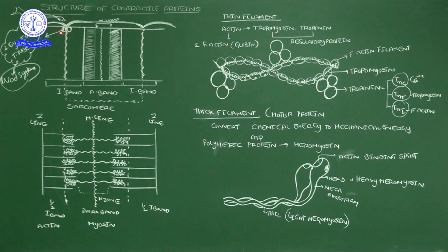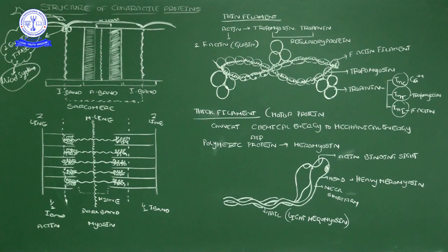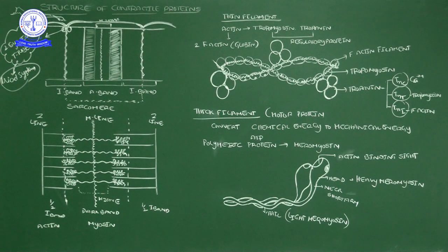Those neurotransmitters release signals that need to be distributed to the total filament. To distribute these signals, the sarcolemma is invaginated inward at regular places — deep depressions — forming structures that go inward of the muscle fiber at the places where the Z-line is located.